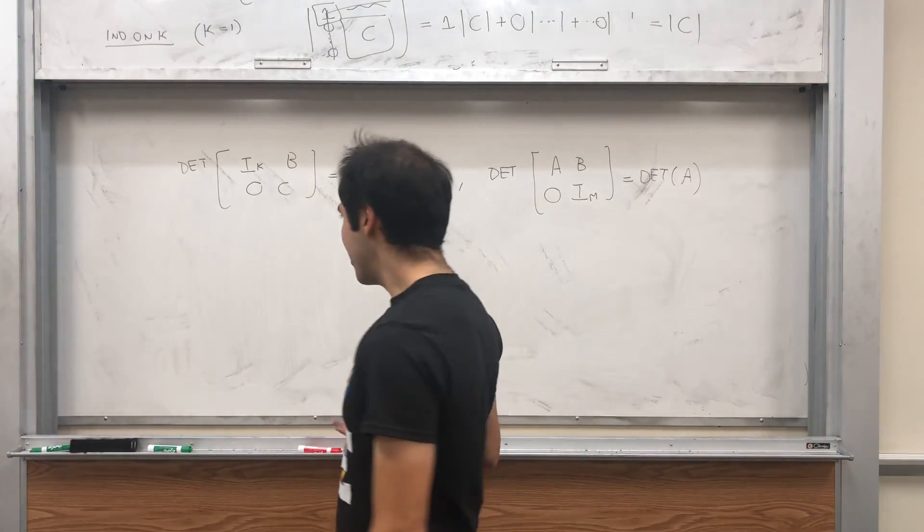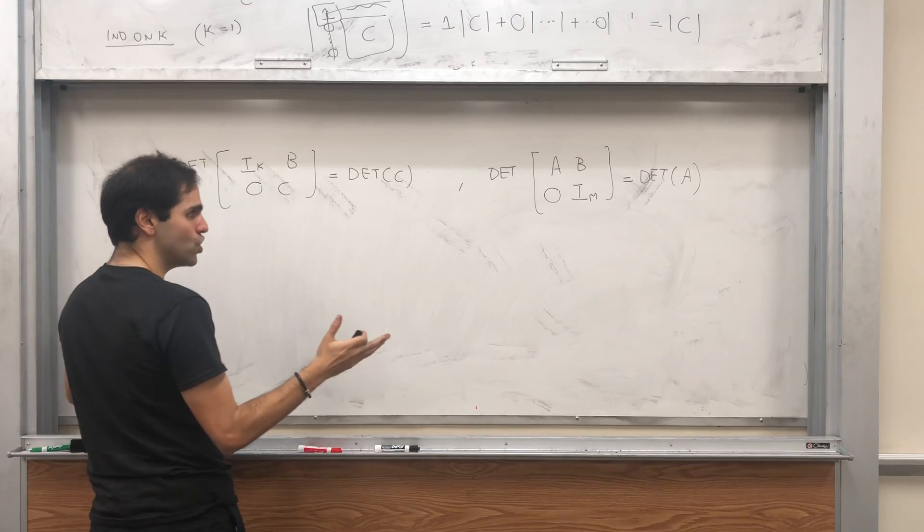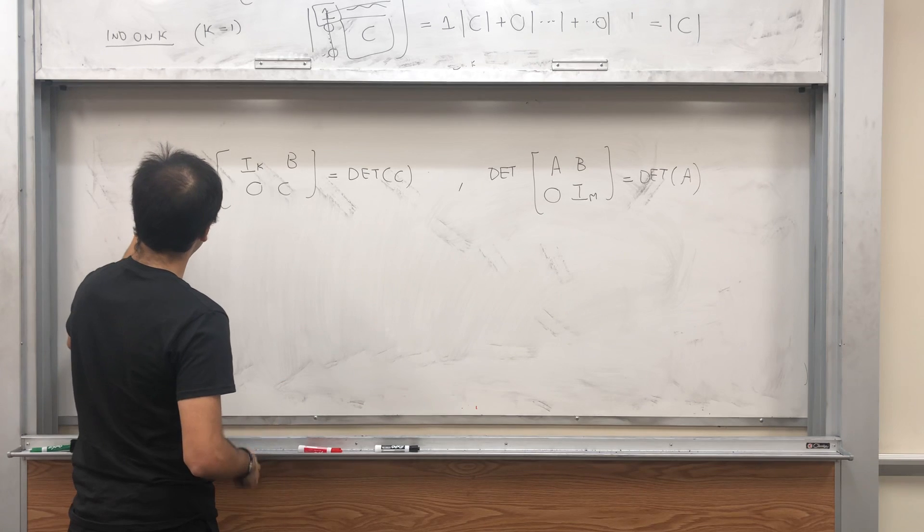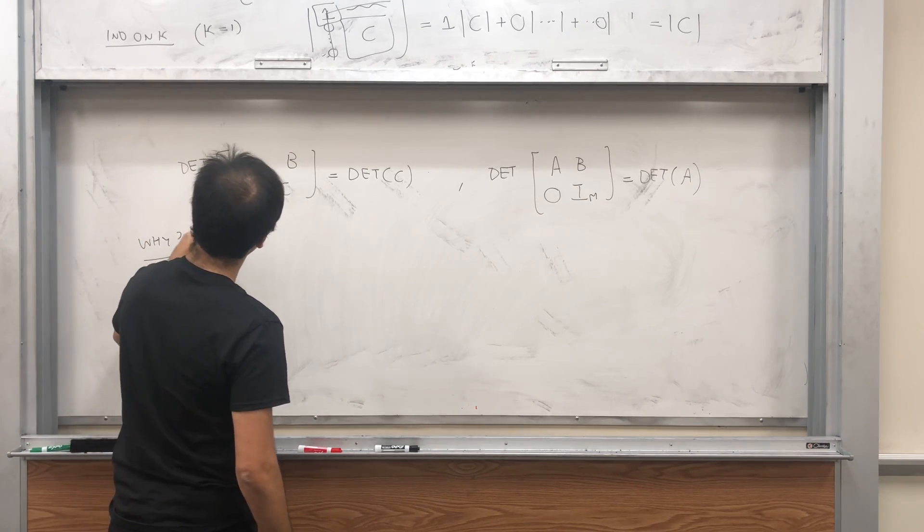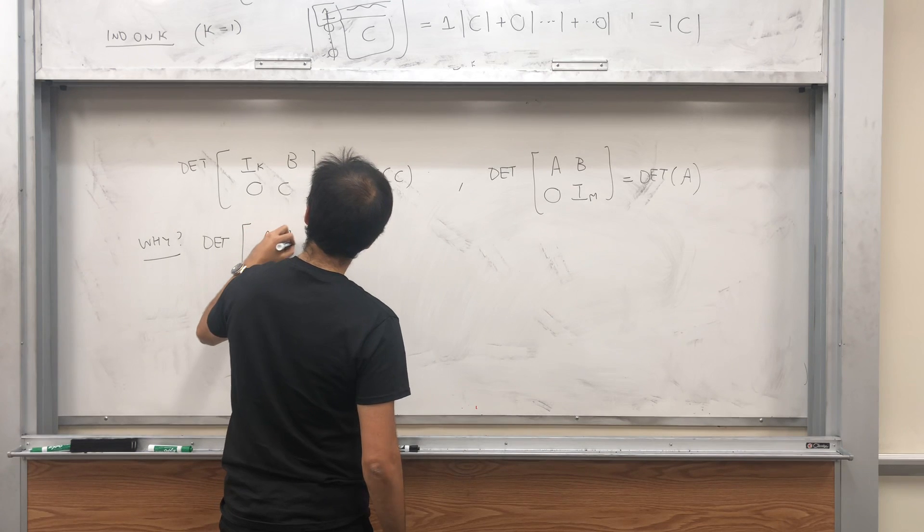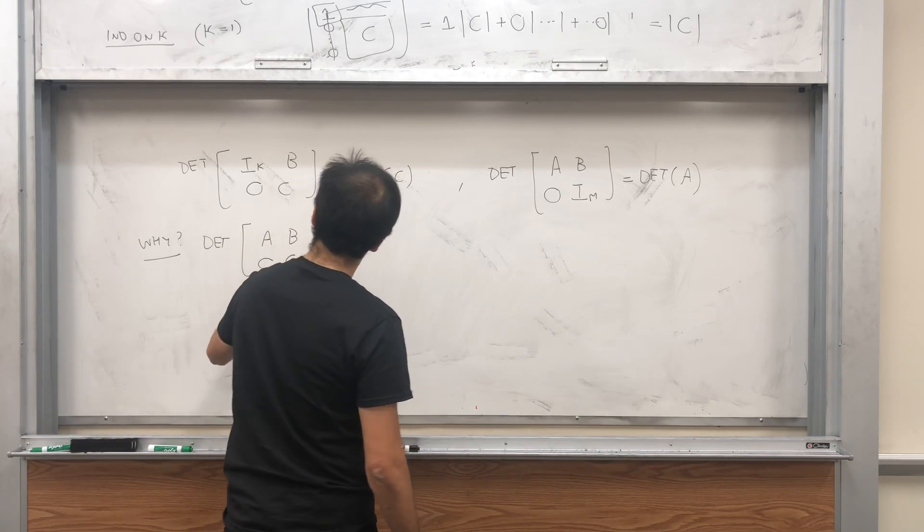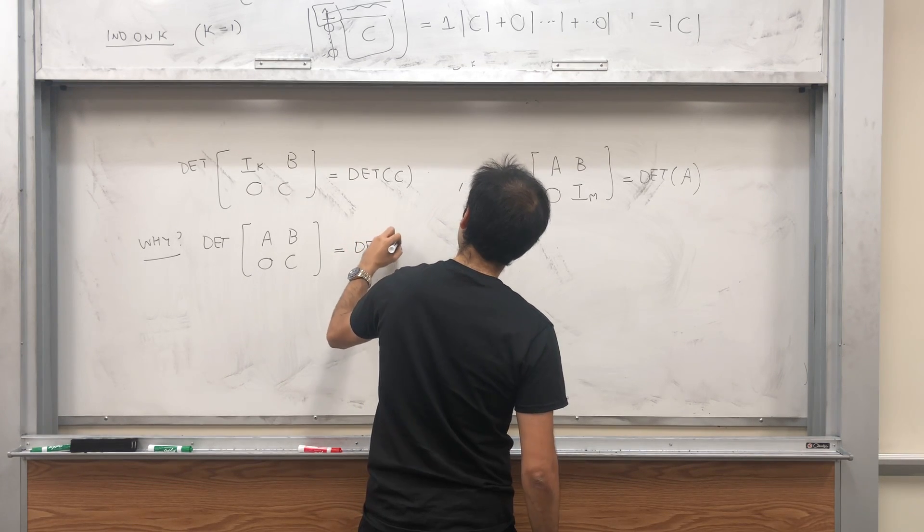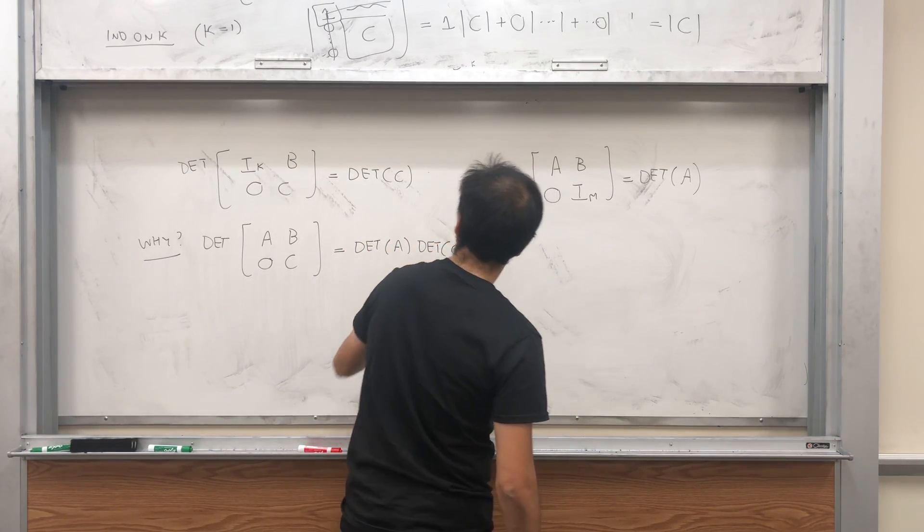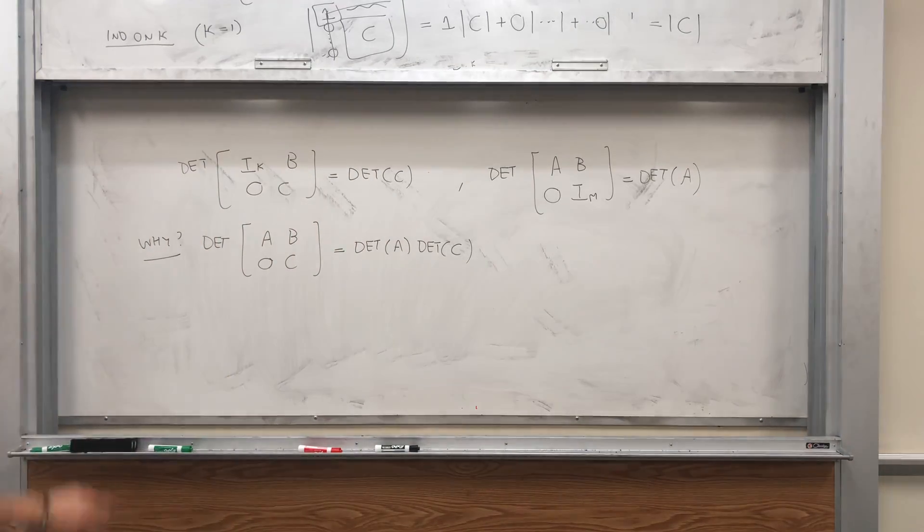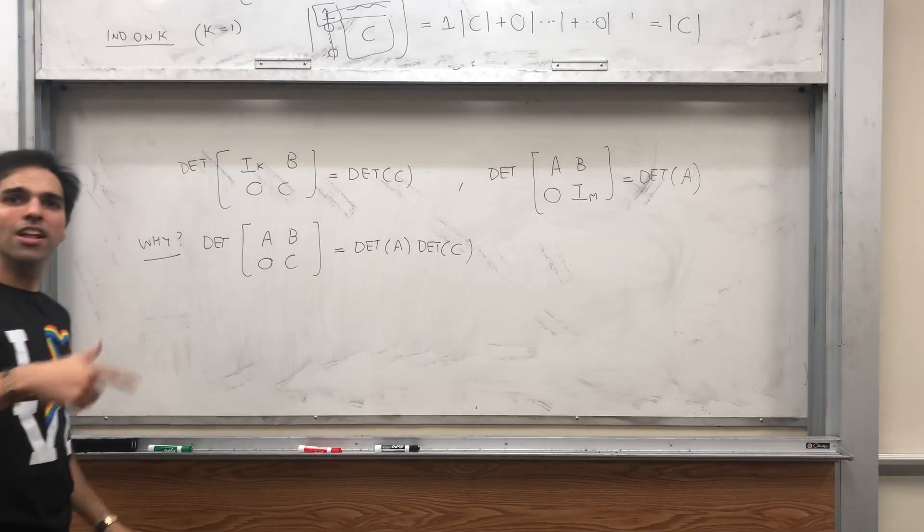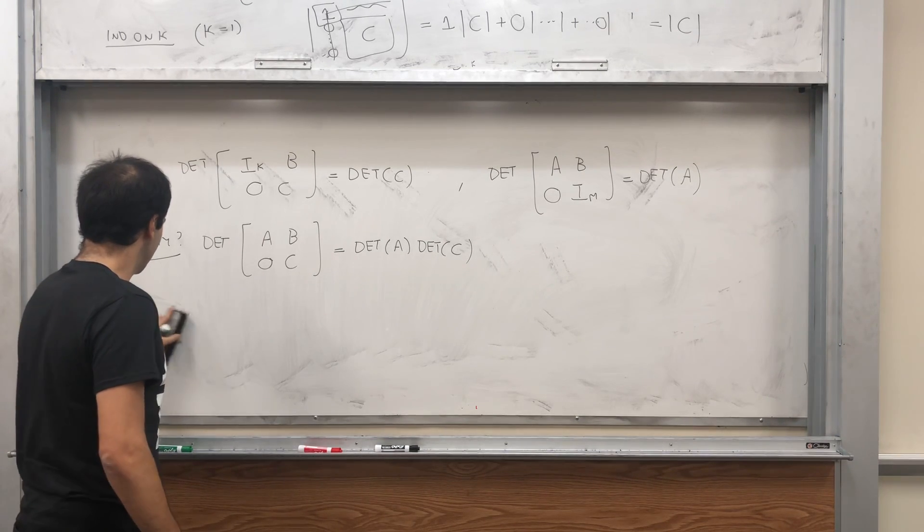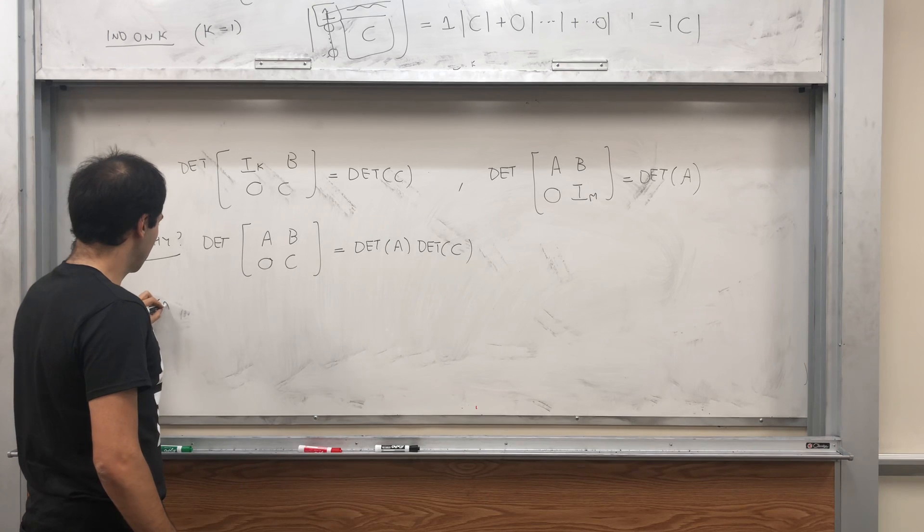Okay, so the question is, how can we now show that the result holds? So why does determinant of [[A, B], [0, C]] equal the determinant of A times the determinant of C? Well first of all, let's just try to get rid of the case where C is not invertible. Case 1: